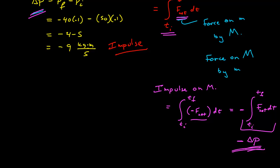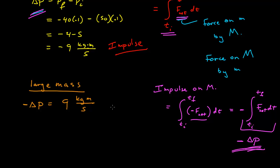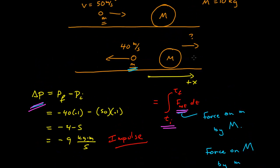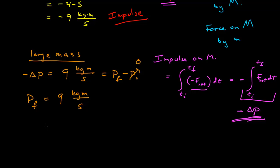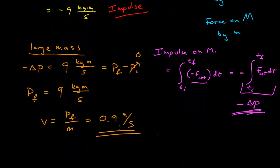So for the large mass, the change in momentum is the negative of −9, which is +9 kg·m/s. Since it was initially at rest, p_initial = 0, so the final momentum is +9 kg·m/s — positive, meaning it moves in the positive x direction. The final speed is the final momentum divided by the mass: 9 / 10 = 0.9 meters per second.